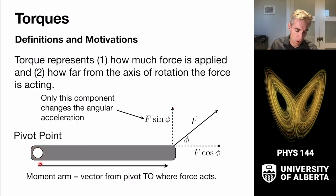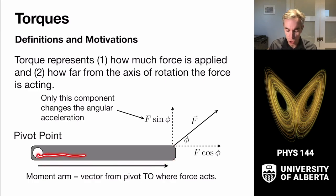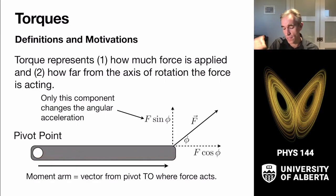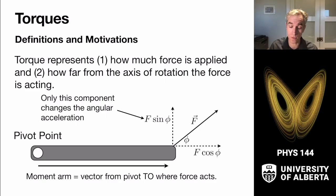We call the moment arm the distance from the pivot point out to where the force is acting — that's where the torque is being calculated. The moment arm is the vector from the pivot to where the force acts, not the other way around. It is pivot point to force. Later we'll generalize to cases where we don't even think about objects pivoting — we just consider the origin of the torque, starting there and going to wherever the force is acting on an extended object.